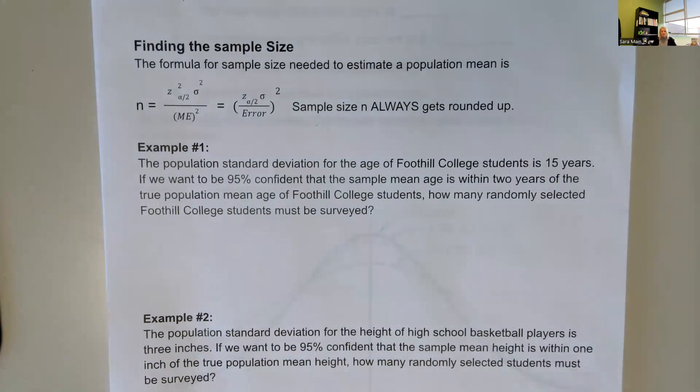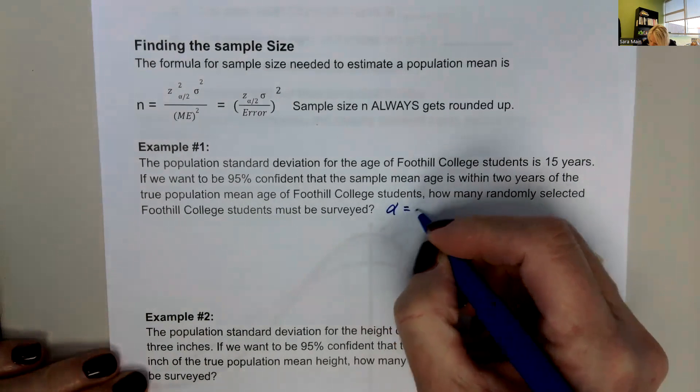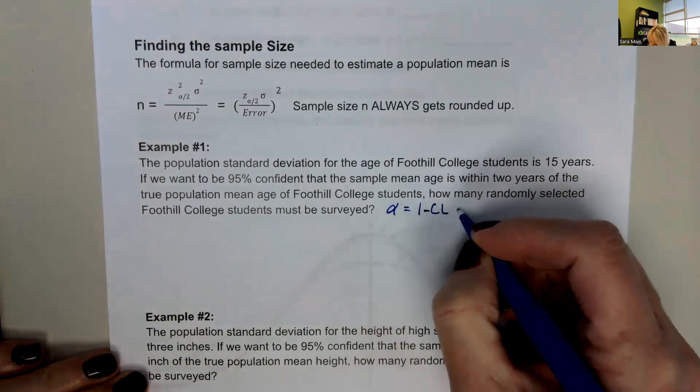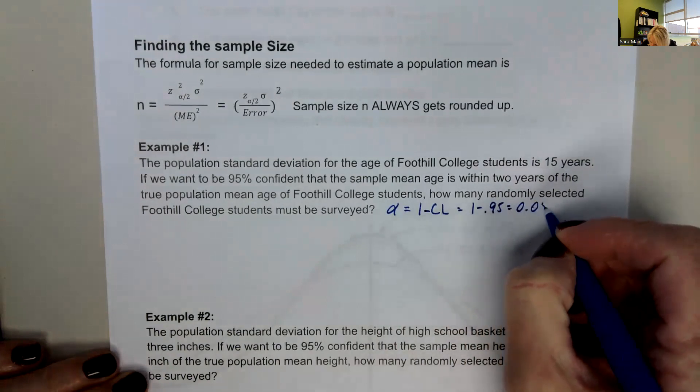So it says we want to be 95% confident. And so that means we need alpha, which is 1 minus our confidence level, which is 1 minus 0.95, or 0.05.